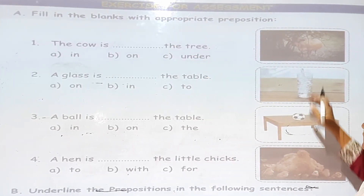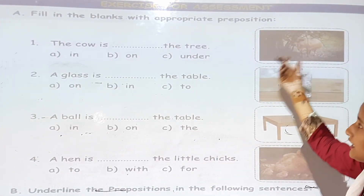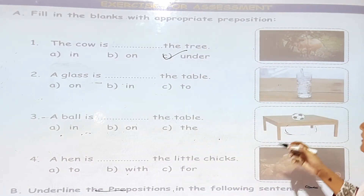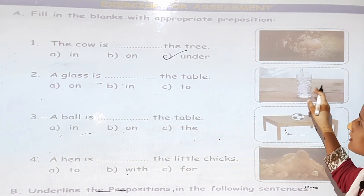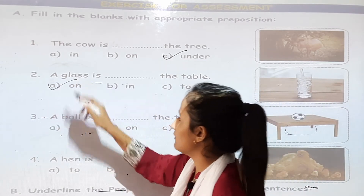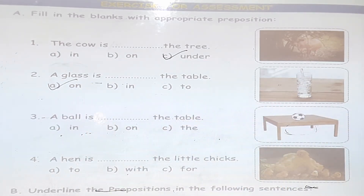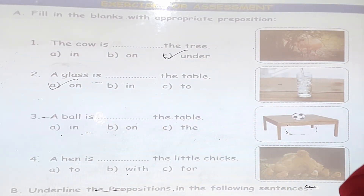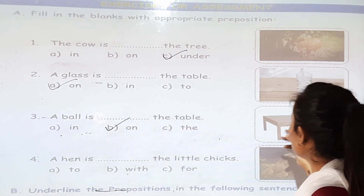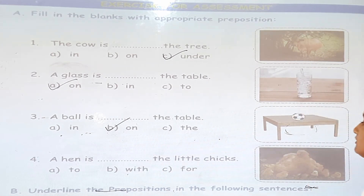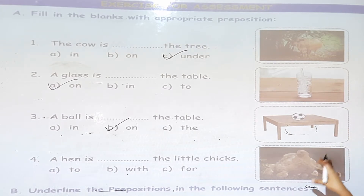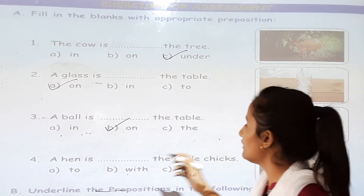The cow is under the tree. The glass is dash the table — the glass is on the table. The ball is dash the table — the ball is on the table. A hen is dash the little chick — the hen is with the little chicks.